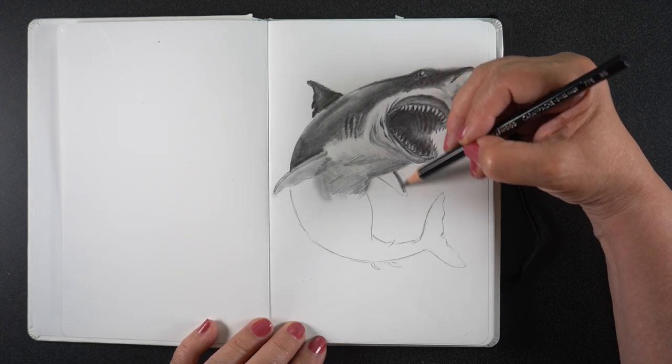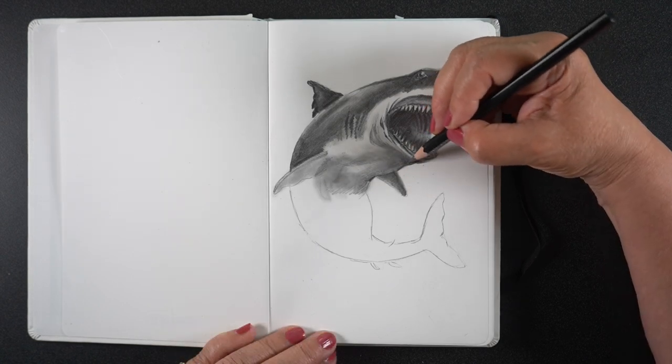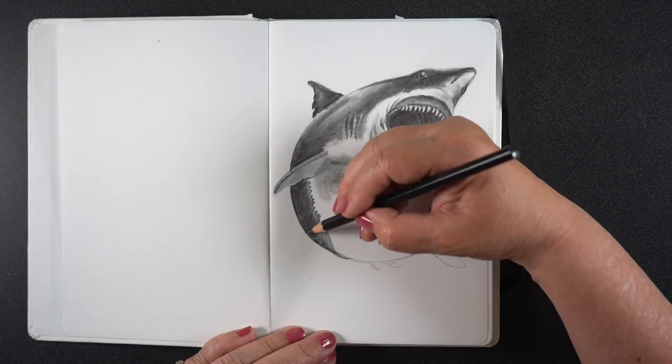I was able to use a number of different blending tools on it, cotton balls, q-tips, all that sort of thing and it was pretty easy to work with. The pencil just kind of slipped across the surface nicely.